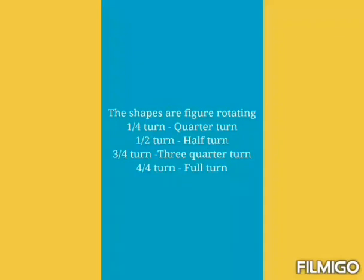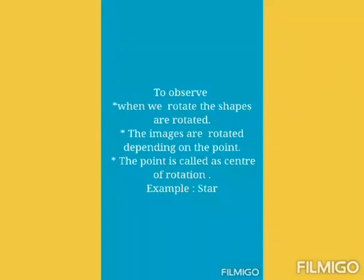Now, we have to see the sum turns. The shapes or figure rotating. 1 by 4 turn is called quarter turn. 1 by 2 turn is called half turn. 3 by 4 turn is called 3 quarter turn. 4 by 4 turn is called full turn. Now, we observe when we rotate, the shapes are rotated.